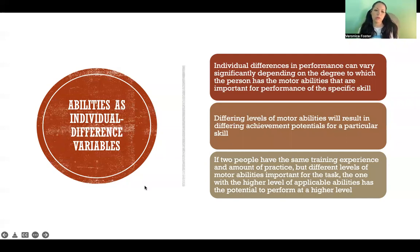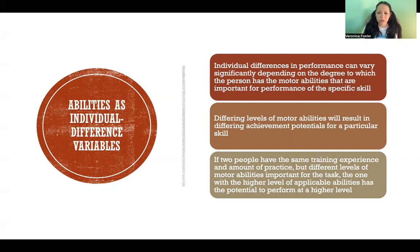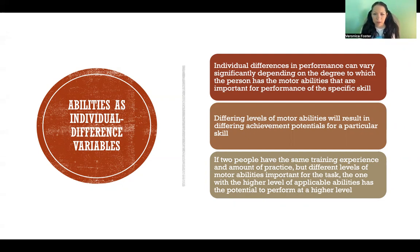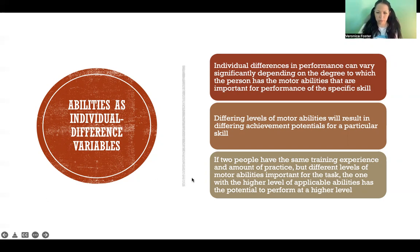Abilities are individual difference variables. Two people can have the same training experience and the same amount of practice, but can have different levels of motor abilities, which makes one person able to achieve a higher level of performance than the other. If we understand these individual differences, we can help to target and improve those specific motor abilities to help even the playing field, so that both people could potentially achieve the same level of skill.